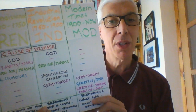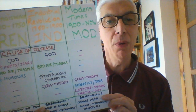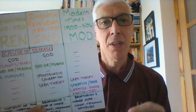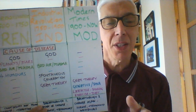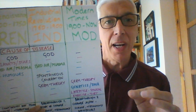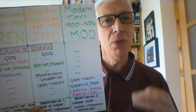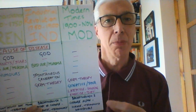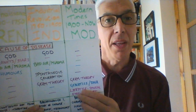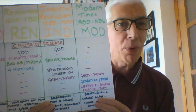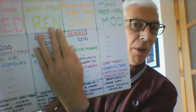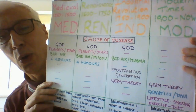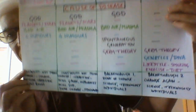In modern times we have breakthrough number two: the importance of genetics and DNA in the 1950s — Crick and Watson. There's a video on that also. We also found a link between lifestyle — smoking, diet, exercise — and the cause of disease. Some diseases can be caused by a bad lifestyle. So there's breakthrough number two — a huge change from about 1860 onwards in the cause of disease.